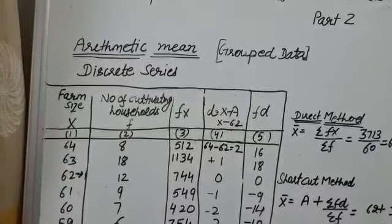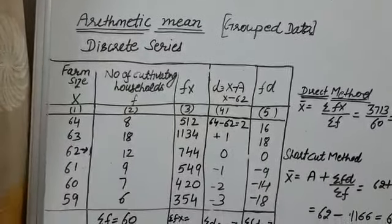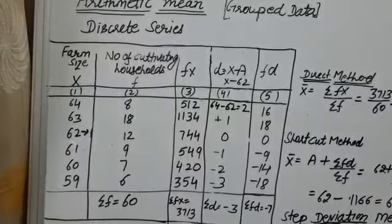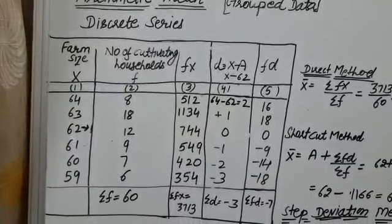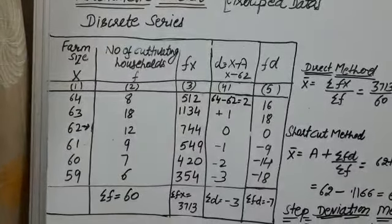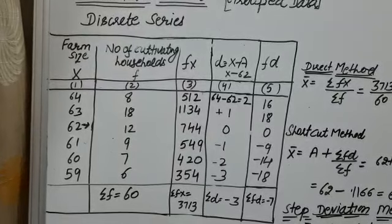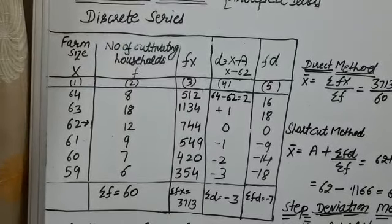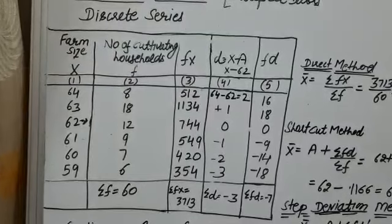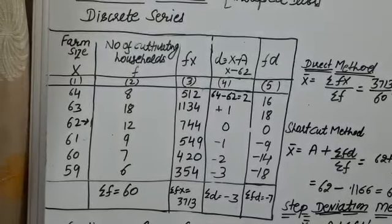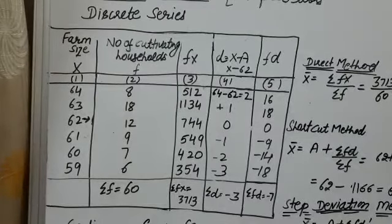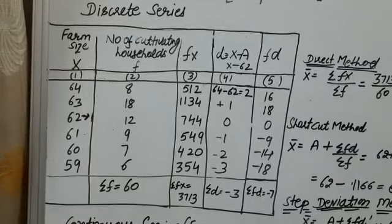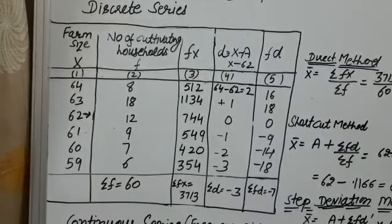Here is a discrete series. As we studied earlier, discrete series are the series in which exact measurement of items is possible. In this series, farm size is given as well as number of cultivating households are given.